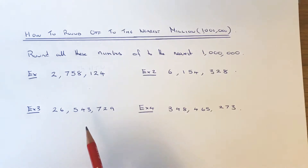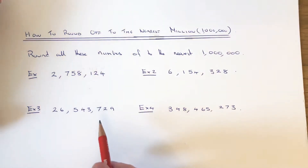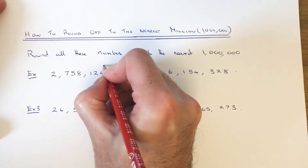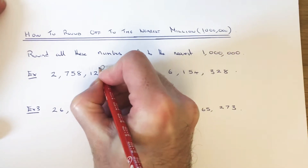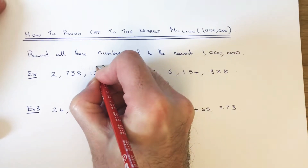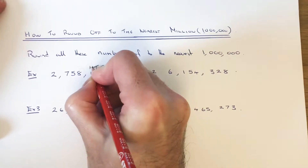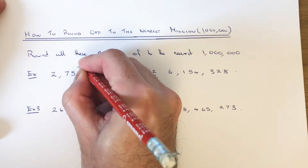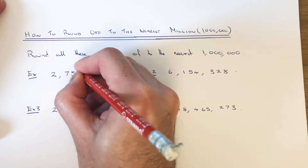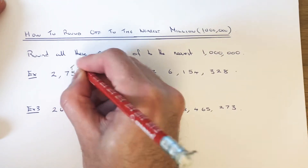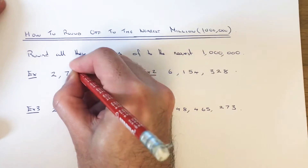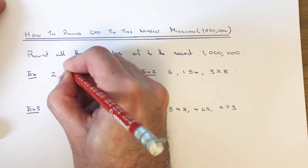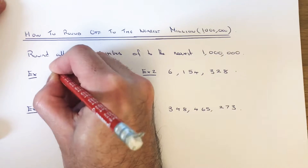The first thing you need to do is find the millions column. If we start on the right-hand side, the column at the end is the ones or the units. Then you've got your tens, then your hundreds, then your thousands, then your tens of thousands, then your hundreds of thousands, and then you've got your millions.